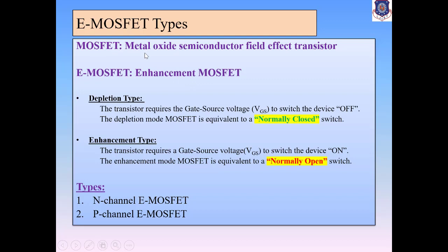MOSFET full form: Metal Oxide Semiconductor Field Effect Transistor. E-MOSFET that is enhancement MOSFET. We have studied already the depletion type and enhancement type MOSFETs. Depletion type is a normally closed switch and enhancement type is a normally open switch. Normally closed means on switch, and normally open means off switch.